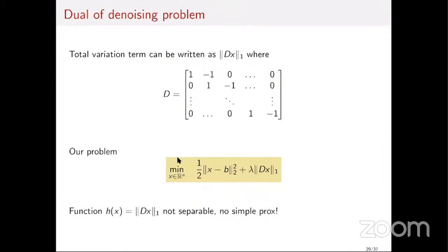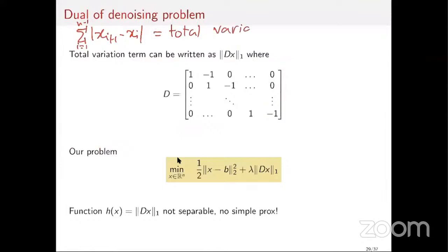Let's rewrite this problem. The total variation term — this sum of |x_{i+1} - x_i| from i=1 to n-1 — is what we call the total variation of x. I'm going to rewrite it as the L1 norm of Dx, where D is the finite difference matrix.